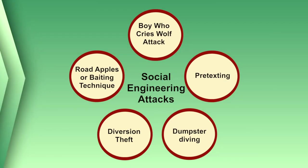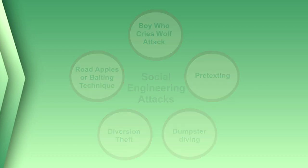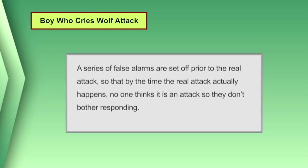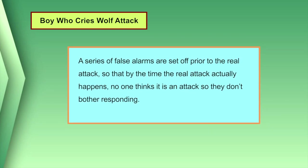Apart from the above techniques, there are some other popular methods used by attackers to perform social engineering attacks. The first is the boy who cries wolf attack. Like in the classic fable, a series of false alarms are set off prior to the real attack so that by the time the real attack happens, no one thinks it is real and they don't bother responding. In a way, they have been social engineered into thinking the attack isn't real.